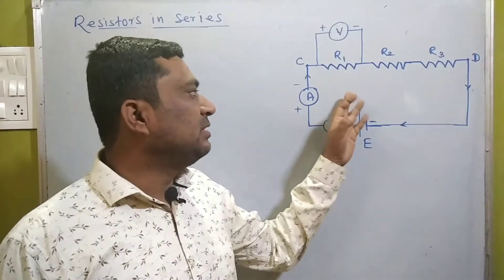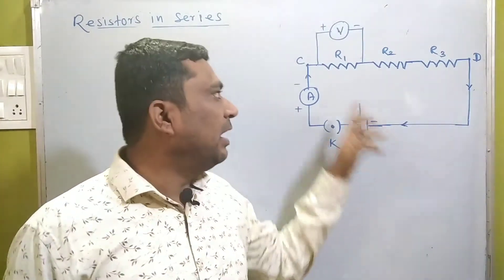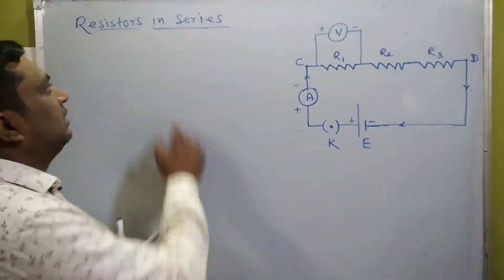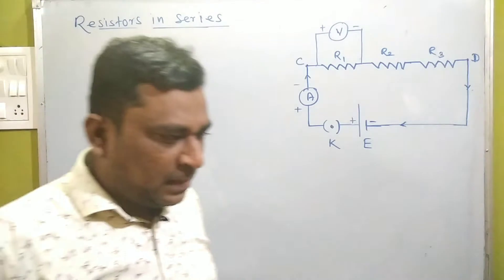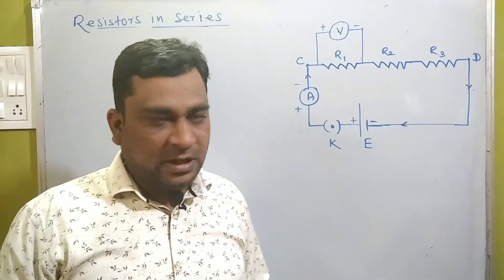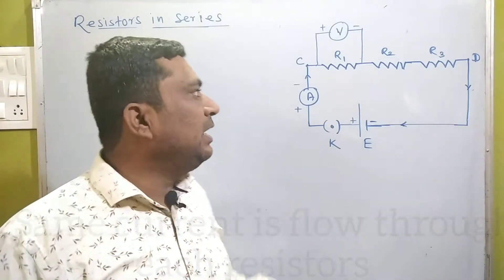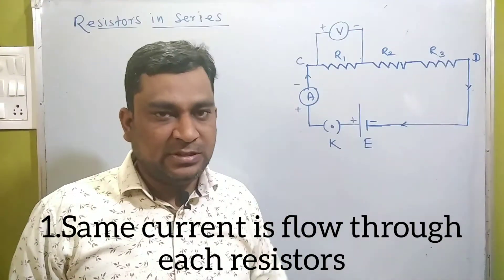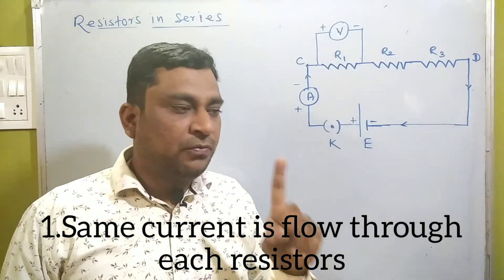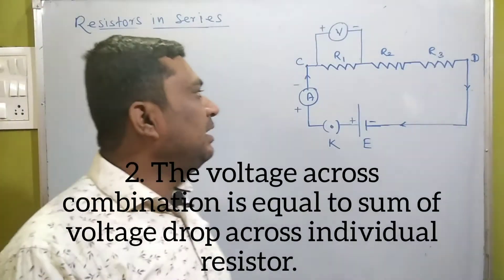When we arrange the diagram, resistances R1, R2, and R3 are connected one after another — that is why they are called resistors connected in series. In a series combination, two characteristics are very important for deriving the expression. Number one: in a series combination, the same current flows across each resistor.